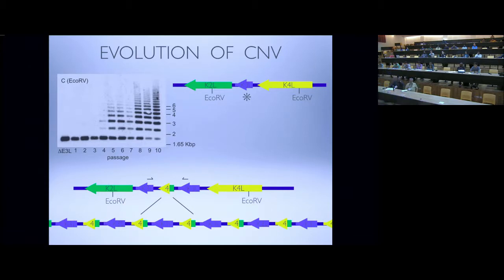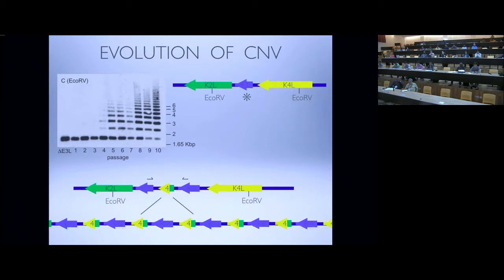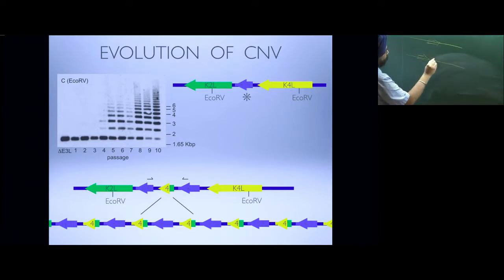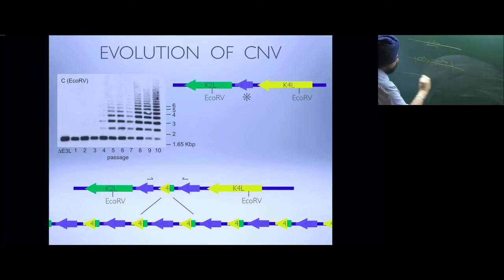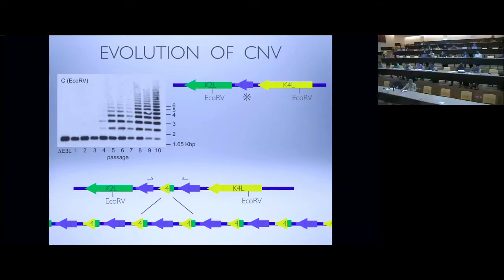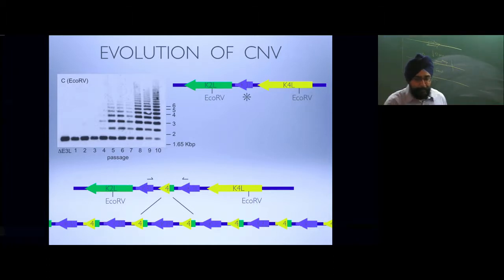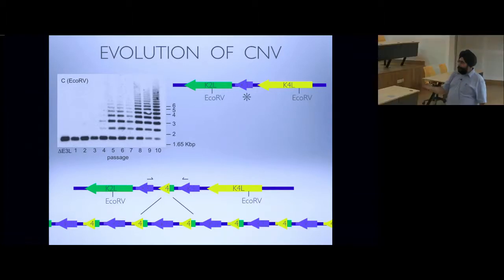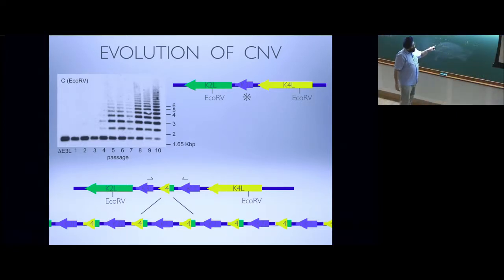In simpler terms: you have a K3L locus facing a huge PKR challenge it cannot deal with. At some low frequency in the population, an original duplication occurs, increasing copy number to two. But you've also provided for recombination, which can quickly go up to a copy number of 15 by internal recombination. Going from copy number 1 to 2 is a very slow, stochastic step — a DNA slippage error arising at very low frequency — but this is the one with the selective advantage, the progenitor of the successful virus.